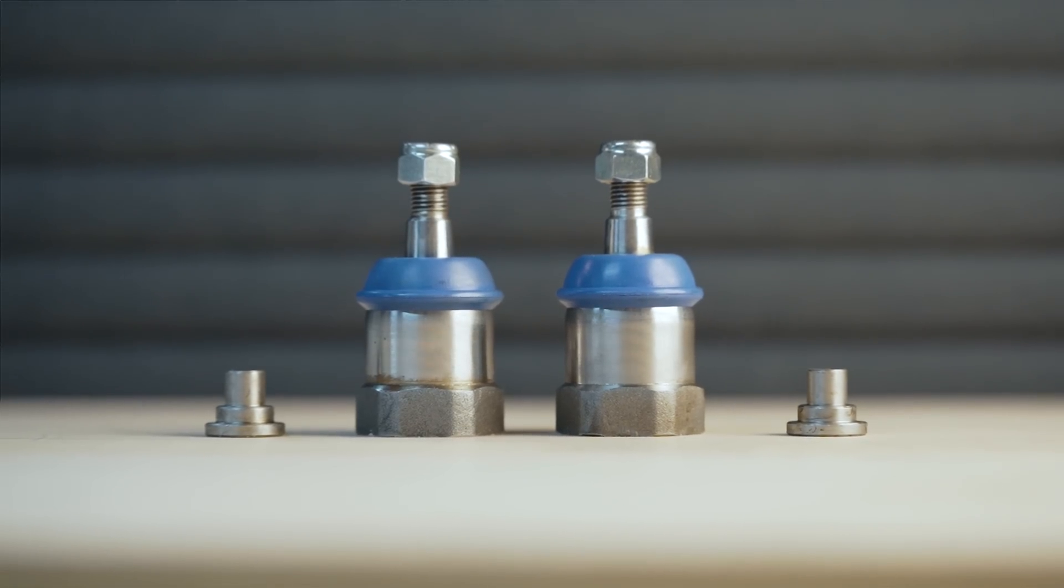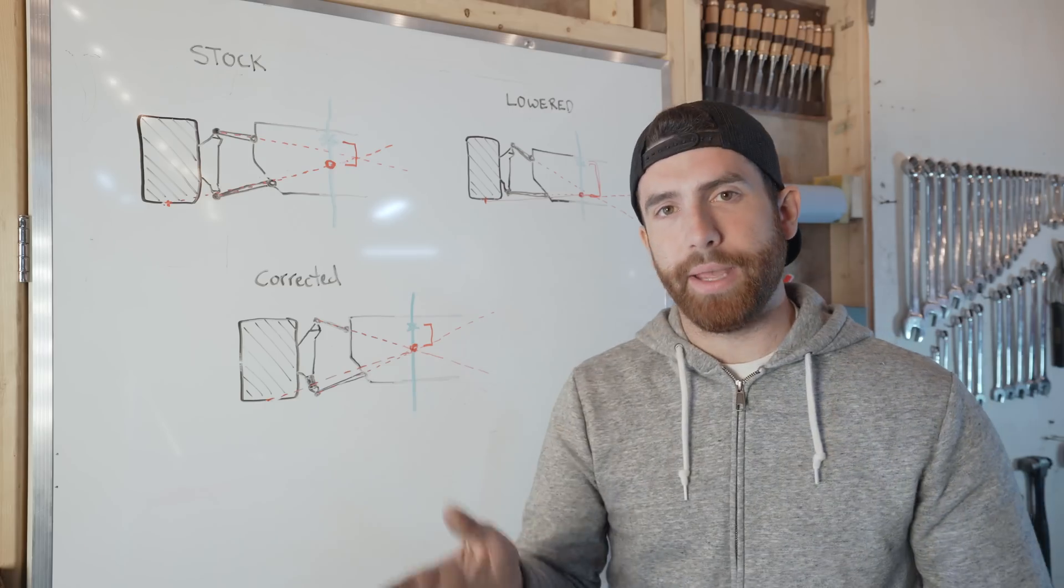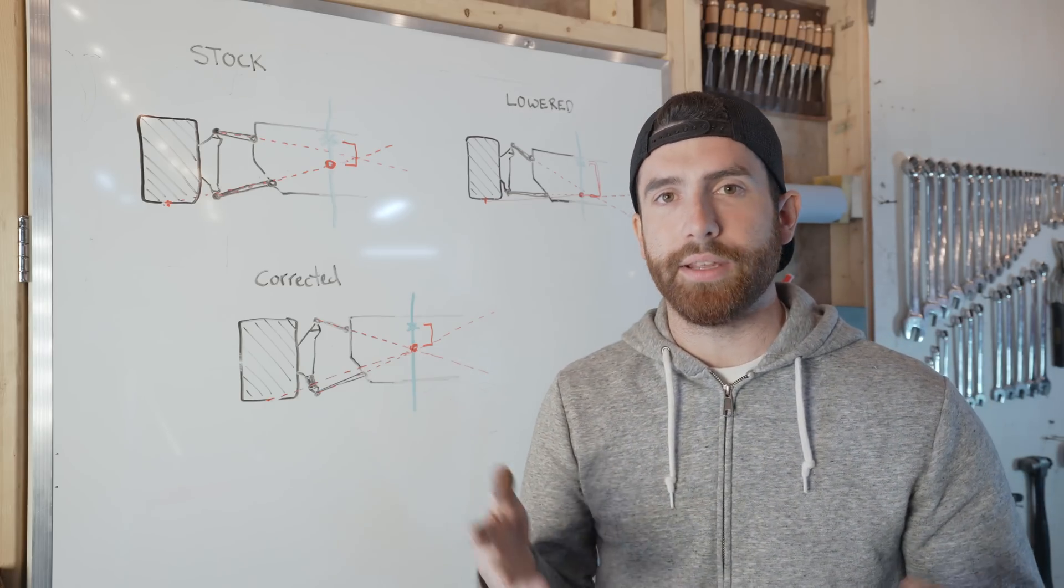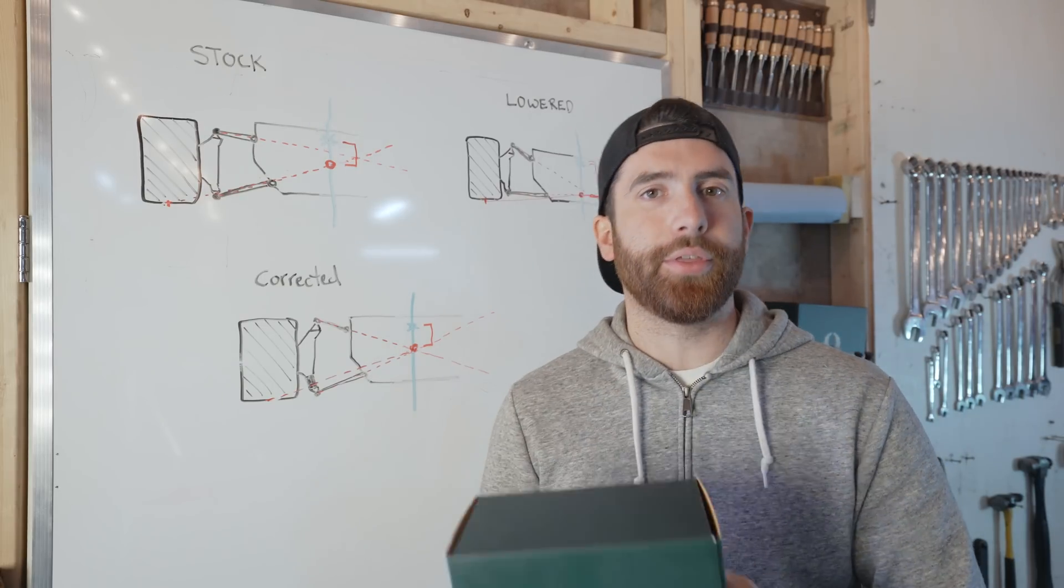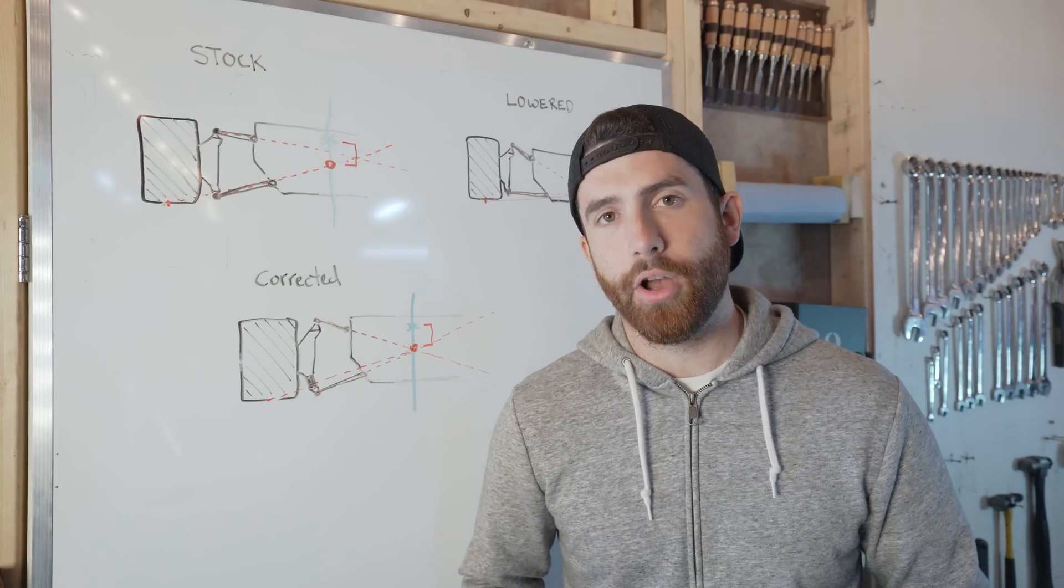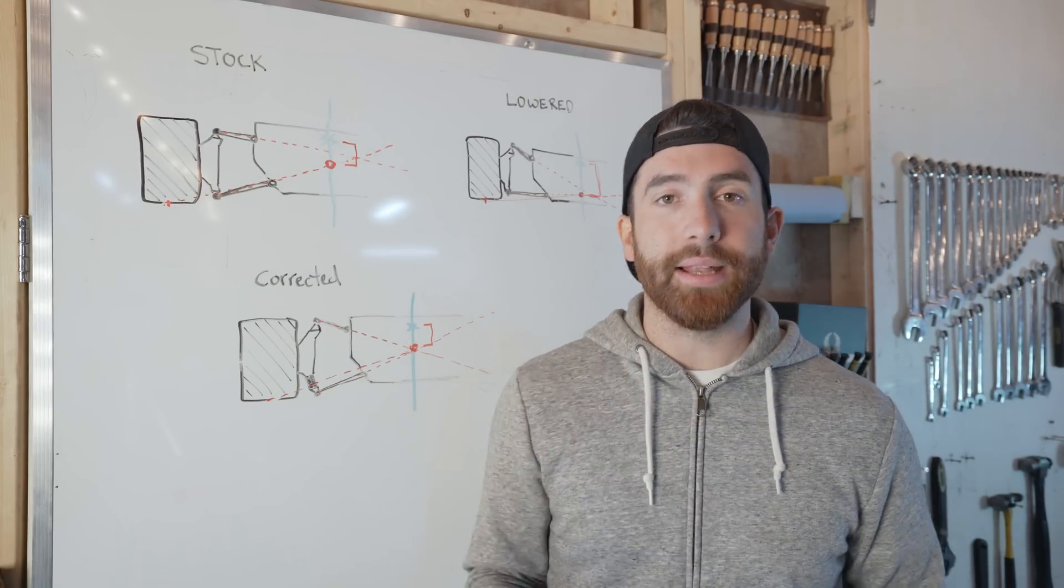So you literally unscrew your factory ball joint, screw this one on, torque it up, and you're done. And from there you have corrected geometry, lower center of gravity, and you'll be amazed at the difference it makes even with a stock street driven car. So if you're interested in picking up a set of these for yourself, check them out on our website, stevesonmotorco.com. The link will be in the description below.